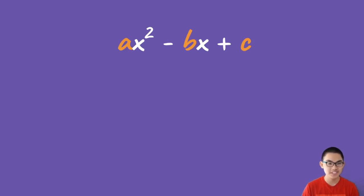So if we have the function ax squared minus bx plus c, then the discriminant is just b squared minus 4ac.